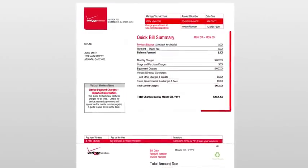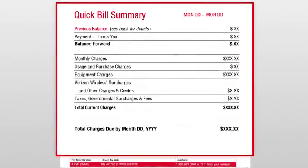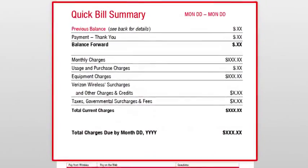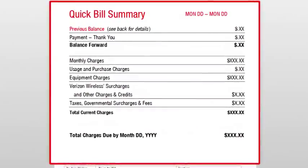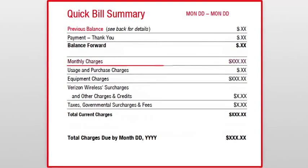Starting on the first page, you will find a quick bill summary. This section captures all of your account and line charges, including monthly charges, which are the account and individual charges for that month, including any discounts.